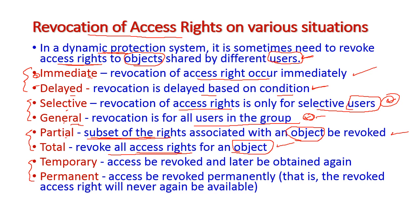The last situation is temporary versus permanent. Temporary means access is revoked first but can be obtained again later — that is, we can give the access back to the user. Permanent means the access is revoked permanently; the revoked access rights will never again be available and will not be given back to the user.